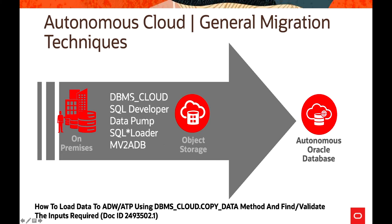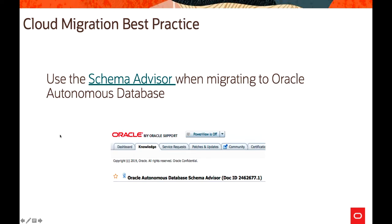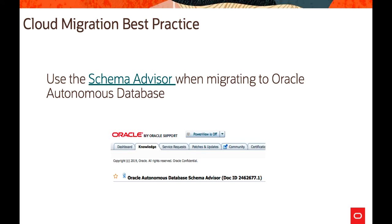When migrating to Oracle Autonomous Database using cloud migration best practices, you can use the Schema Advisor. It provides insight into what is available in on-prem or the source — which objects can be moved and which cannot, since there are certain restrictions. Mostly we bring the data, and partitioning requirements or indexes can be handled within the database itself. Bringing data along with referential integrity and business constraints is sufficient most of the time. The MOS note 2462677.1 provides Schema Advisor details, and it is highly suggested to run it on your source system.